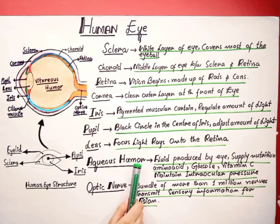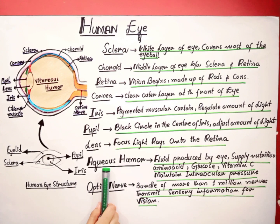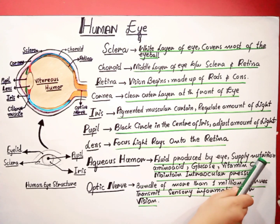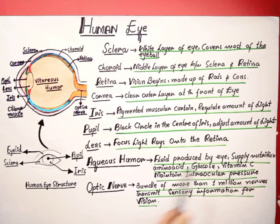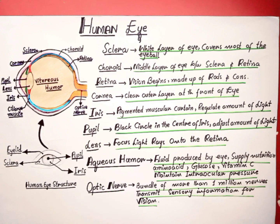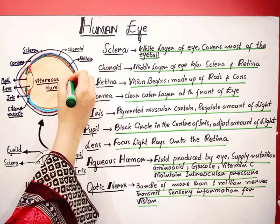Next is the aqueous humor. The aqueous humor is the fluid portion of the eye, produced by the eye itself. It supplies nutrition such as amino acids, glucose, and vitamin C, and it maintains the intraocular pressure — the pressure present within the eye.